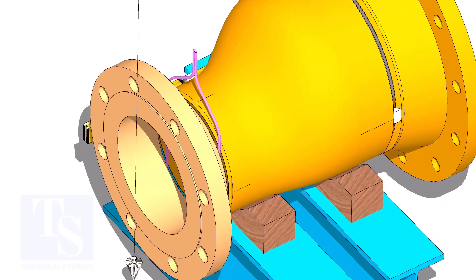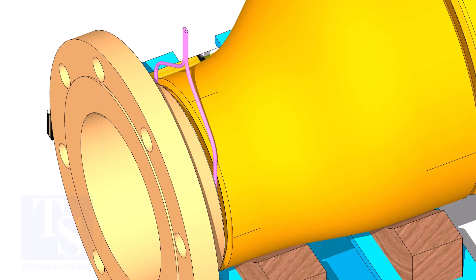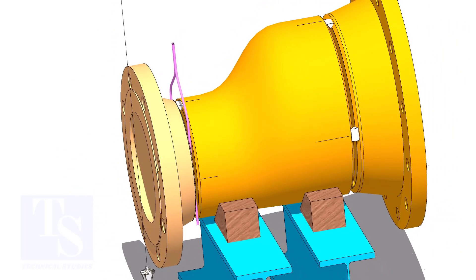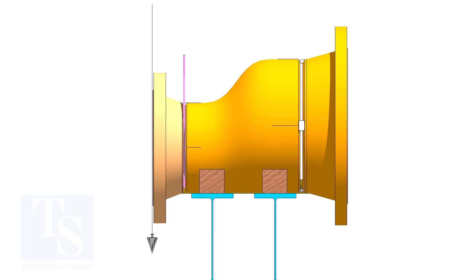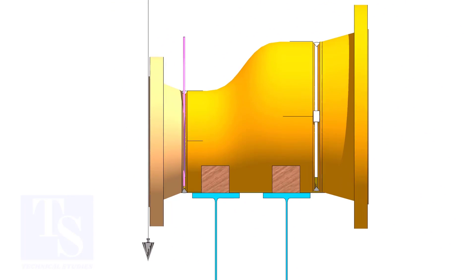TAC weld below. Check the vertical plumbness. TAC weld on the top side. Correct the vertical plumbness and TAC weld below.